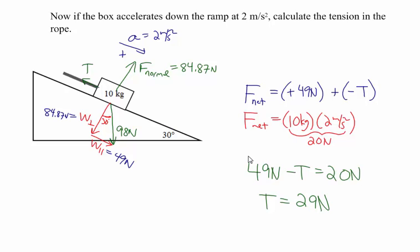As expected, since the box accelerates down the ramp, the tension pulling up the ramp is less than 49 Newtons — and 29 Newtons is indeed less than 49. This is analogous to lifting and lowering straight down: when something accelerates straight down, the tension is less than the full weight of the object. Here, we're just comparing tension with the parallel component of the weight.